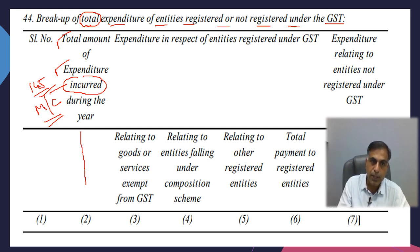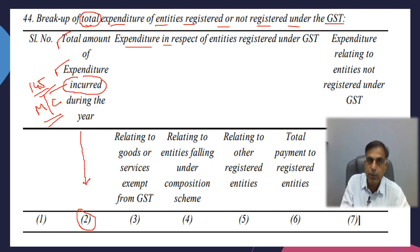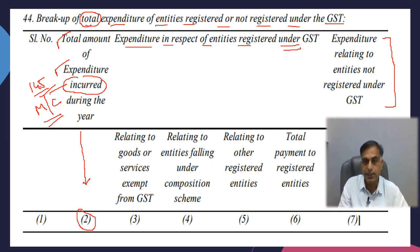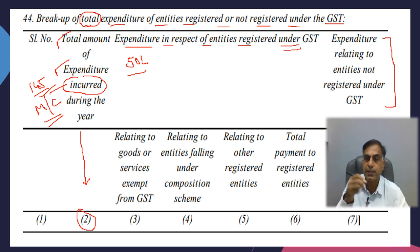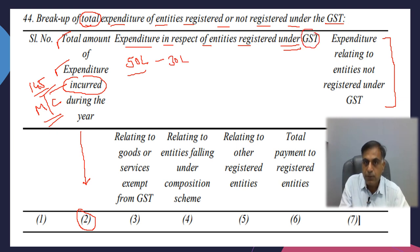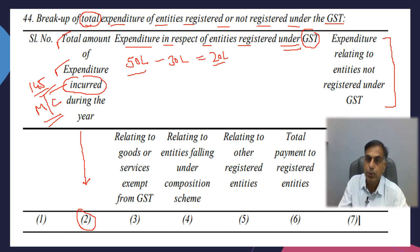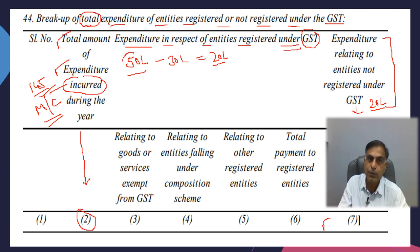Whatever is the method of accounting, accordingly you have to put up your total expenditure amount here. This expenditure is bifurcated into expenditure in respect of entities registered under GST and expenditure relating to entities not registered under GST. For example: a person incurred total expenditure of Rs. 50 lakh during a year under various heads — revenue, capital, etc. Out of them, Rs. 30 lakh was incurred on persons having a GST number and the remaining Rs. 20 lakh on those not having a GST number. The Rs. 20 lakh would be reported under Column 7, and the Rs. 30 lakh under Column 6, bifurcated into three parts.